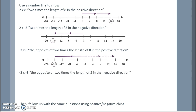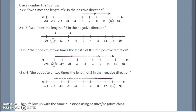Further, negative 2 times negative 8: the opposite of 2 times the length of 8 in the negative direction. So we originally think that it is 2 times the length of 8, but we want it in the opposite of the negative direction, giving us positive 16.